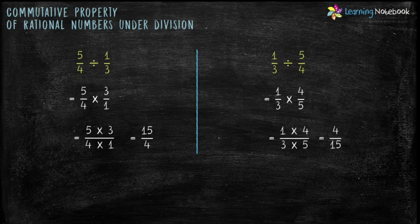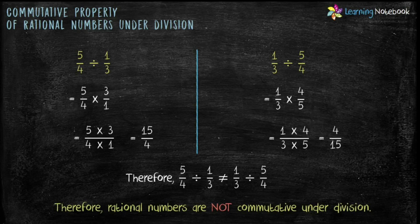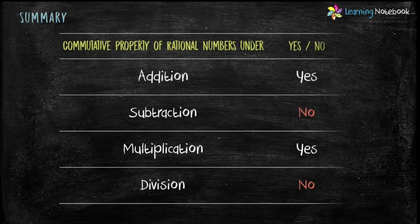So students, the answer is different in both the cases. Therefore, 5 by 4 divided by 1 by 3 is not equal to 1 by 3 divided by 5 by 4. So rational numbers are not commutative under division. In summary, we have seen the commutative property of rational numbers under addition, subtraction, multiplication and division.